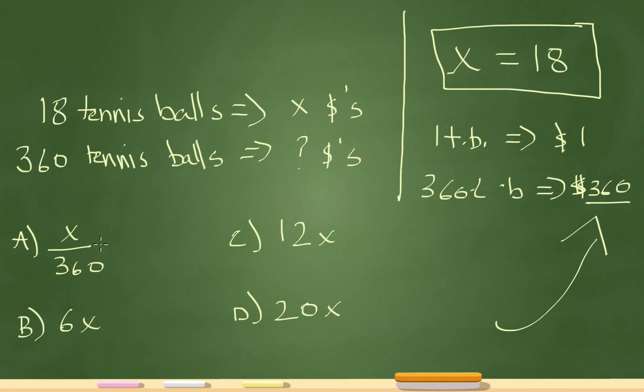So let's go to A, 18 divided by 360. I'm going to cross that right away. We know that 18 divided by 360 is not going to be 360, so we know that A won't work. Then it's going to be 6 times 18. 6 times 18 is not 360. No need to calculate it out. It's not going to be it.